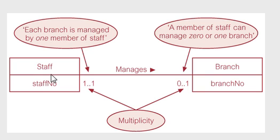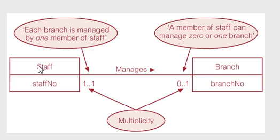At this point, you would write these entity relationship diagrams before you even have tables written out. This is before you do all your SQL, so it's really more of a concept. So your entity — you have this entity staff, you have this entity branch, and you have this relationship, and the relationship is called Manages, because staff manages branch.